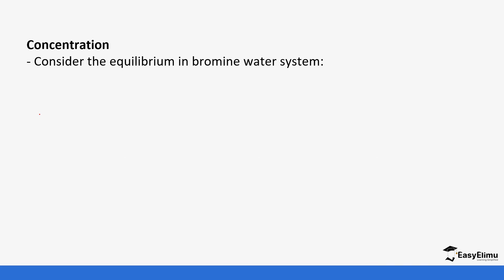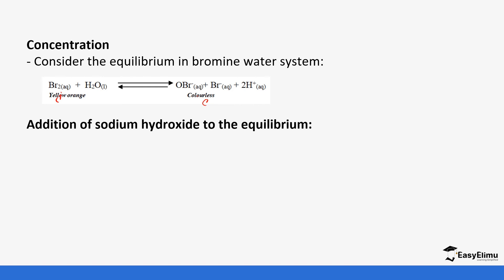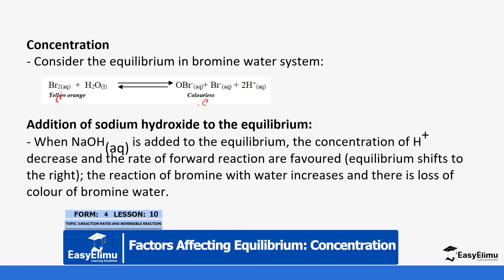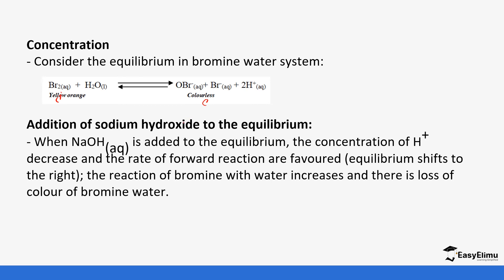For concentration, consider this equilibrium reaction where bromine reacts with water to form bromide and hydrogen ions — they are dissociating in solution to form these ions. Remember it begins with a yellow color because of the bromine, changing to a colorless solution because it has dissolved in the water. If you add sodium hydroxide into the equilibrium, the concentration of hydrogen ions decreases and the rate of forward reaction is favored, so the equilibrium shifts to the right. The reaction of bromine with water increases and there is a loss of color — the yellow-orange color of bromine water disappears and a colorless solution is formed.